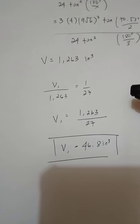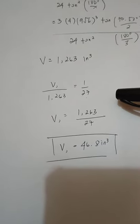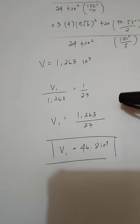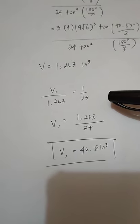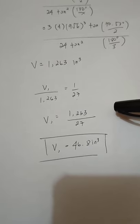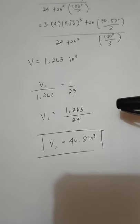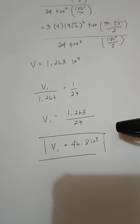Therefore, the volume of the cutoff tetrahedron is V sub 1 over 1263 equals 1 over 27. We multiply 1263 to 1 and divide it by 27. The volume is V sub 1 is 46.8 inches cubed.